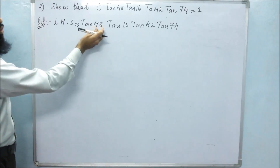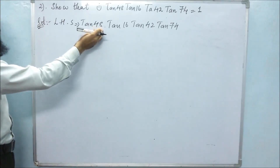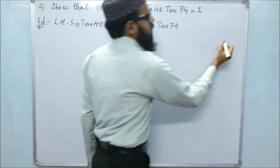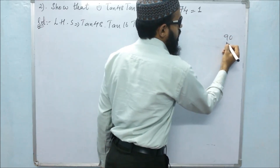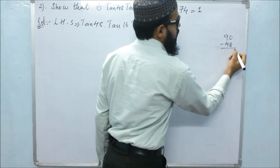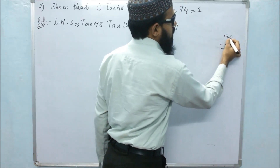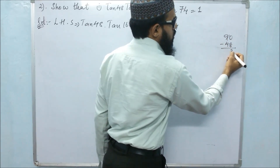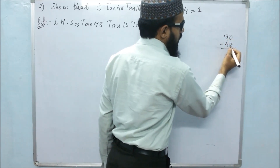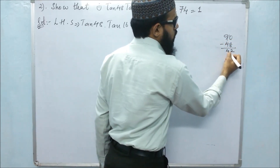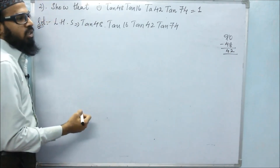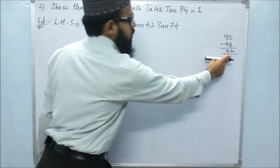Now we will subtract 48 from 90. So 90 minus 48: 10 minus 8 is 2, and 8 minus 4 is 4, so 42. Therefore, 90 minus 48 is 42.